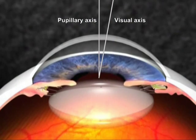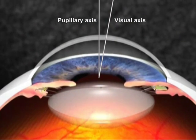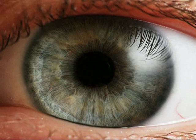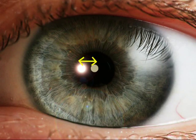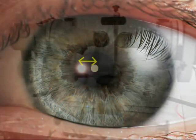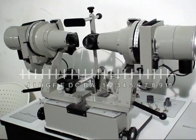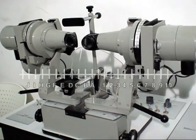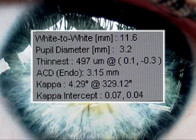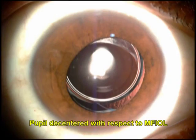A lesser studied entity is angle kappa. Angle kappa is the distance between the center of the pupil and the light reflex. It can be measured with the synoptophore or using the Orbscan. The average angle kappa is about plus 5 degrees. So does angle kappa play a role in multifocal IOLs?